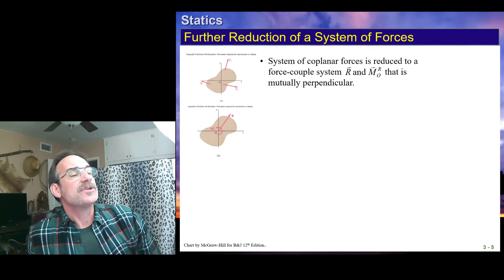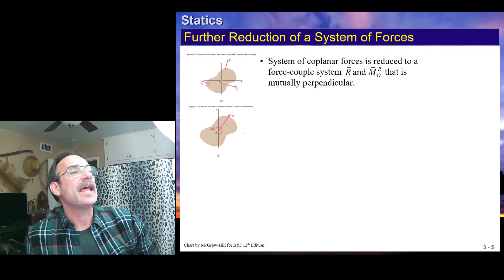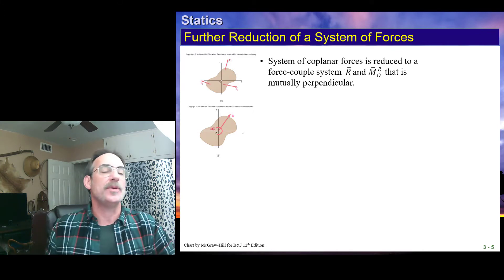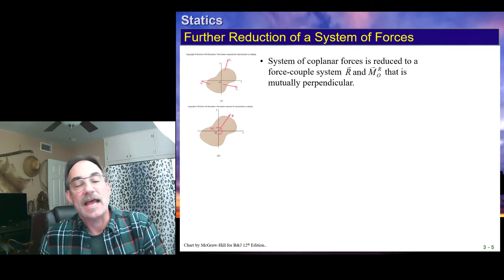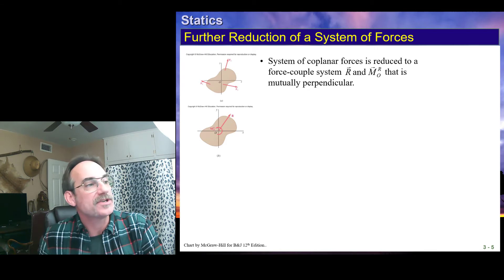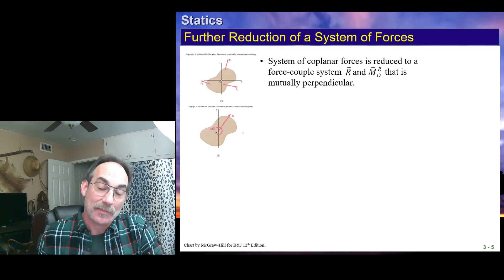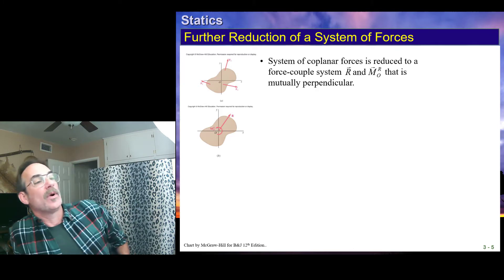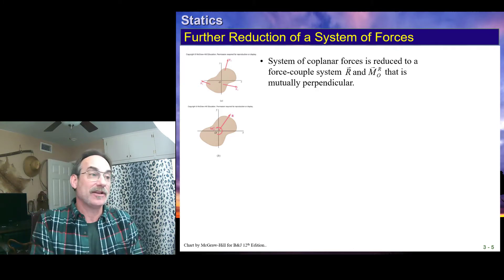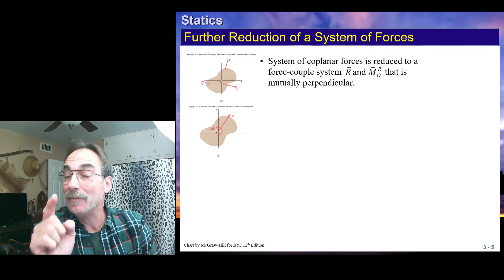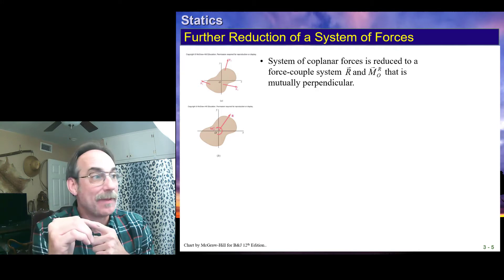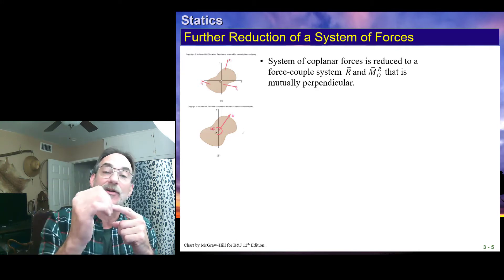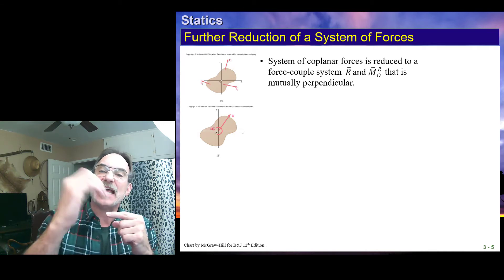Here we have a blob with some coplanar forces, and the system is reduced to a force couple system R and M that is mutually perpendicular. In the upper figure, we have a plane X and Y with three forces. Since these forces lie in a plane, we know they'll reduce to a single force and moment that are mutually perpendicular. We pick point O and find R, which lies in the plane, and M, which is perpendicular to the plane. M is defined by the axis it acts about — the moment is perpendicular to the plane, causing things to happen within the plane.